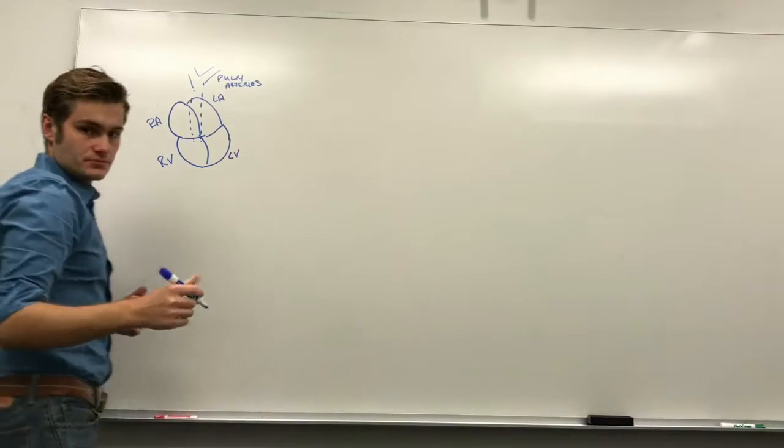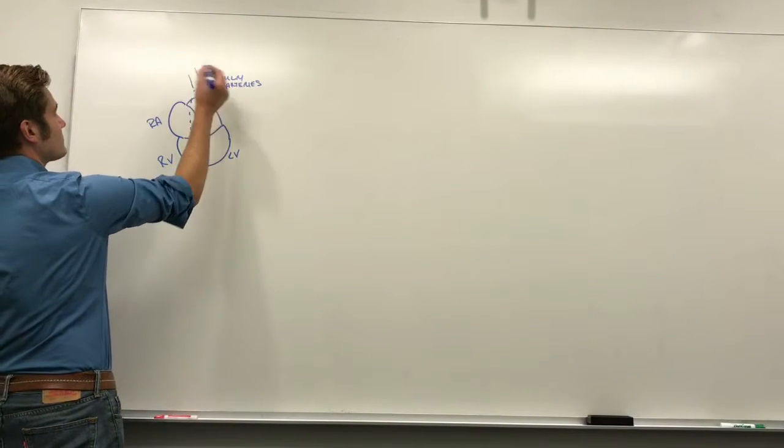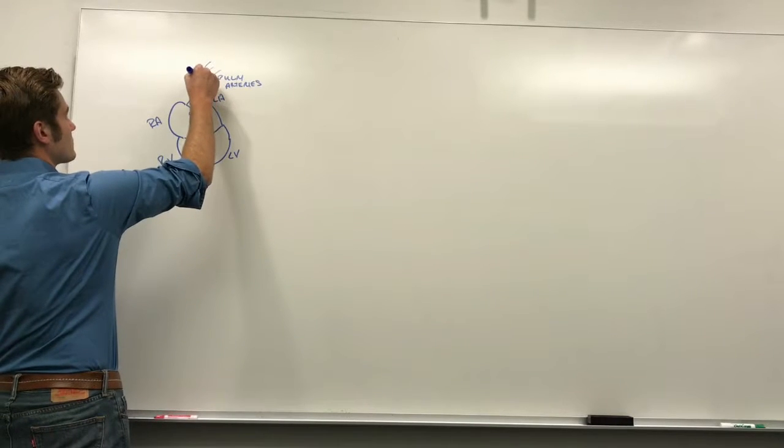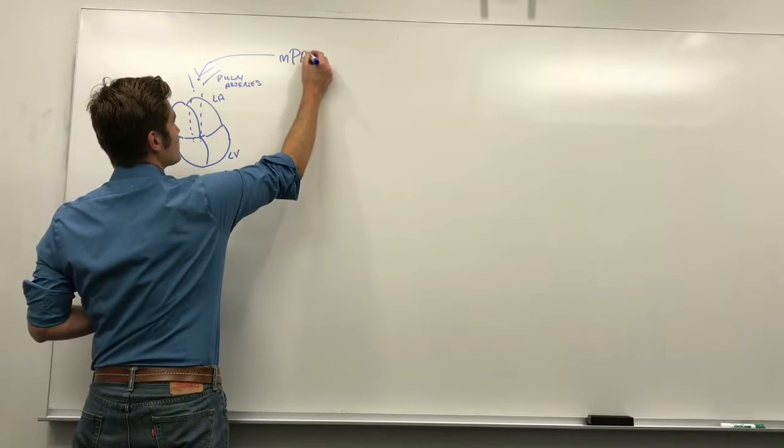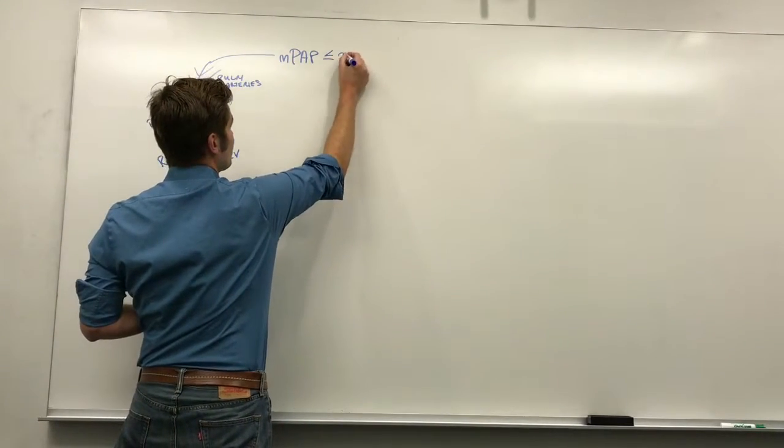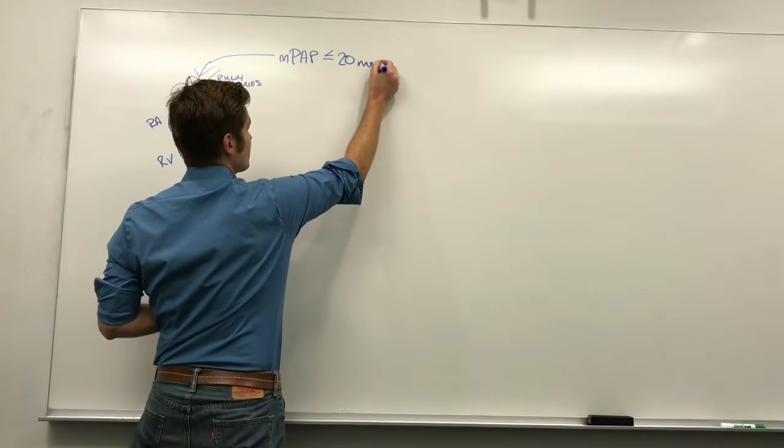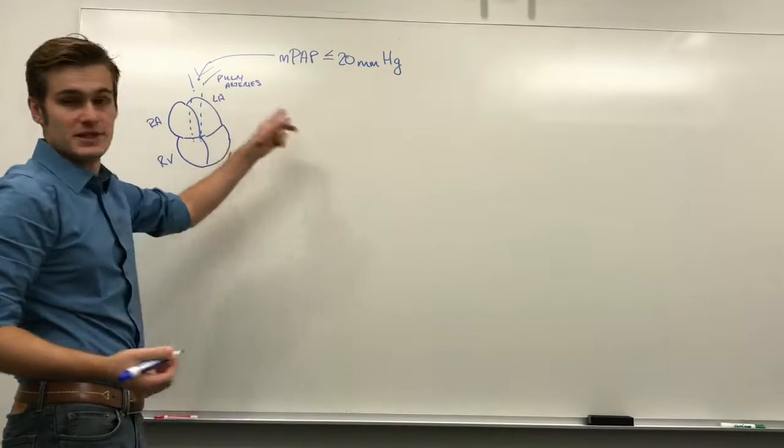So, pulmonary hypertension is really defined based on the pressure inside here. Normally, there's a mean pulmonary arterial pressure. Normally, it should be greater than or equal to 20 millimeters of mercury. In pulmonary hypertension, this value is elevated.